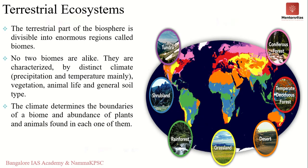A biome refers to a very large community of plants and animals that occupies a distinct region with a distinct climate. A biome is generally characterized by precipitation, temperature, vegetation, animal life, and the general soil type. The classification of terrestrial ecosystems and where they are located and distributed across the globe has already been covered when we covered biomes.